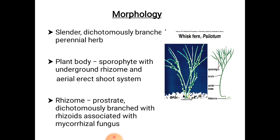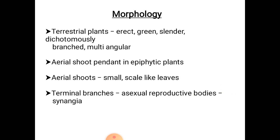The morphology of Psilotum: the plant body is a diploid sporophyte. It consists of underground horizontally growing rhizome and aerial erect shoots. The rhizome is cylindrical, prostrate, and dichotomously branched and brownish in color. The rhizome bears small numerous rhizoids but no roots. Some branches of rhizome grow as erect shoots. These aerial shoots are ribbed, multi-angular, dichotomously branched and deep green in color. All over the aerial shoots, small leaf-like appendages or scales are present.